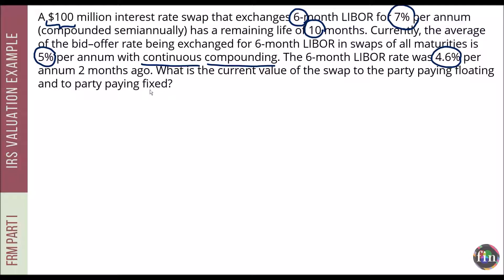The value to the party paying fixed would just be the negative of the party paying floating. Let's draw the cash flow diagram. There are two cash flows remaining: one happening 4 months from today and one happening 10 months from today, six months after the first.